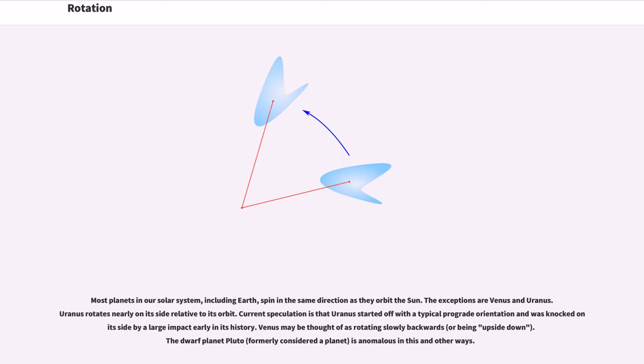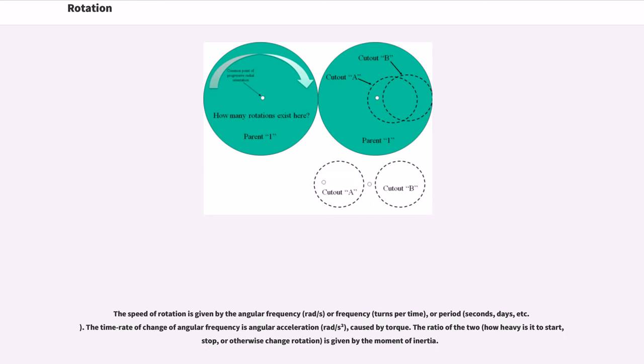Most planets in our solar system, including Earth, spin in the same direction as they orbit the Sun. The exceptions are Venus and Uranus. Uranus rotates nearly on its side relative to its orbit. Current speculation is that Uranus started off with a typical prograde orientation and was knocked on its side by a large impact early in its history. Venus may be thought of as rotating slowly backwards. The dwarf planet Pluto is anomalous in this and other ways.